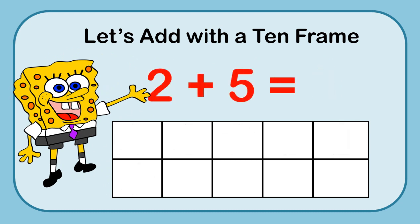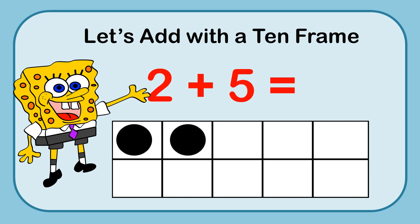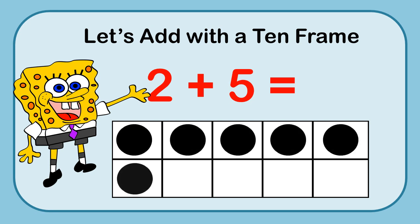2 plus 5. Put 2 markers and then put 5 more: 1, 2, 3, 4, 5. I can see that the whole row has 5 in it — there's already 5. And then looking at 2 more, counting up 2 more: 5, 6, 7. So 2 plus 5 equals 7.